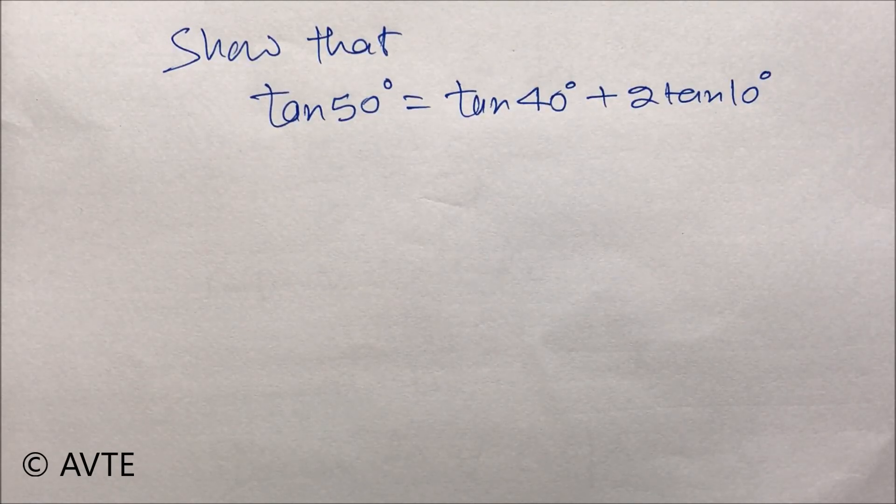Show that tan 50 degrees is equal to tan 40 degrees plus 2 tan 10 degrees. These are the trick questions.